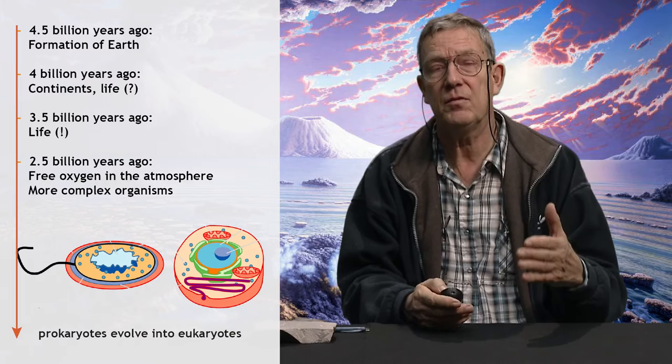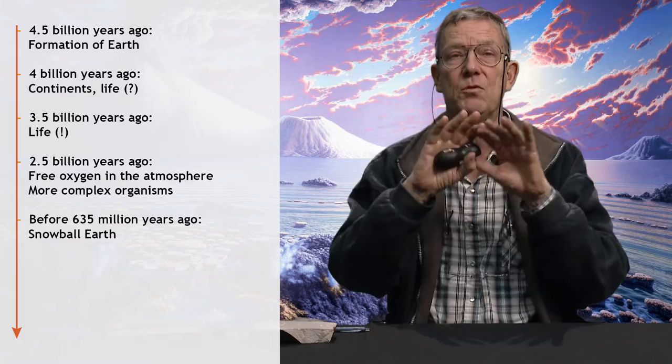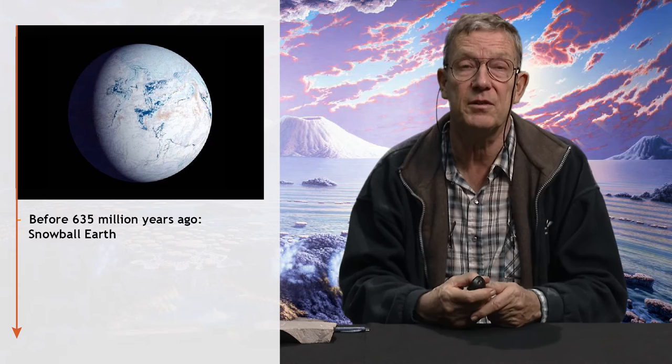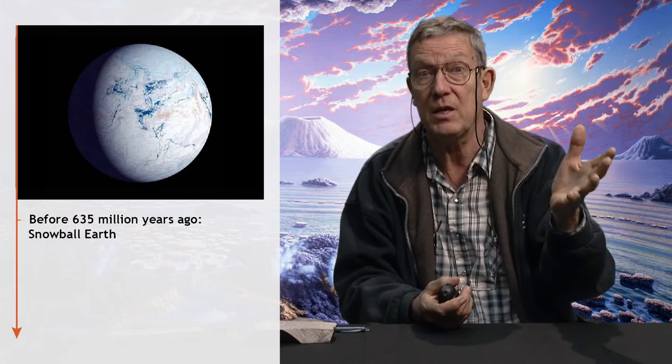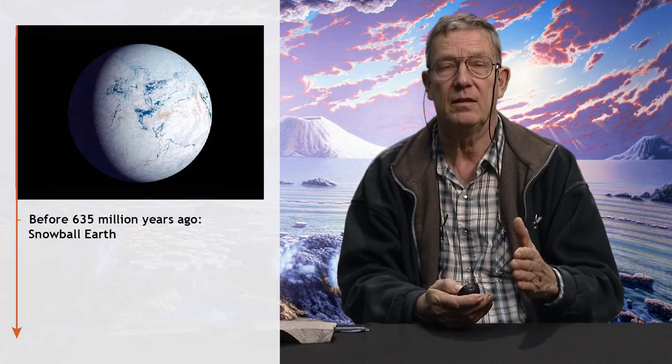Near the end of what we call the Precambrian, just before the appearance of complex life, the Earth is hit by two so-called snowball events — the planet is totally frozen over. We have evidence for that because we found the remains of glaciers at the equator at sea level, which is an impossible proposition: ice masses at sea level on the equator. These ice ages come and go, and after the last one, we see an important development.